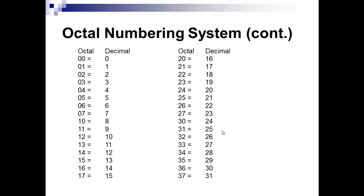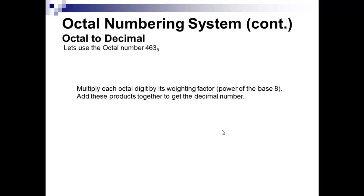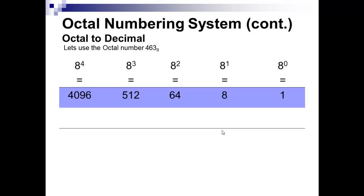We're going to cover octal to decimal, decimal to octal, binary to octal, and octal to binary — you should be able to convert in pretty much any direction. To convert an octal number like 463 to decimal, we use the same method as binary, except instead of powers of two we use powers of eight: eight to the zero, eight to the first, eight to the second, and so on. The chart is laid out with those power positions.